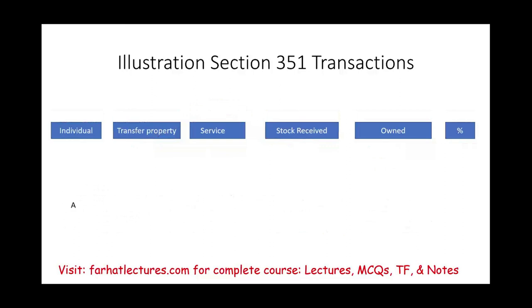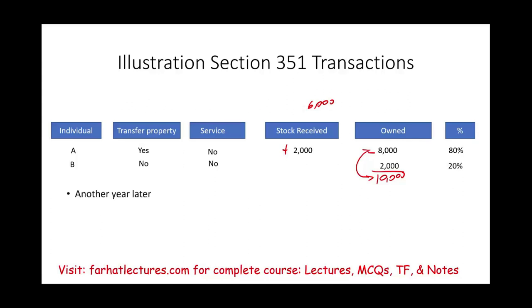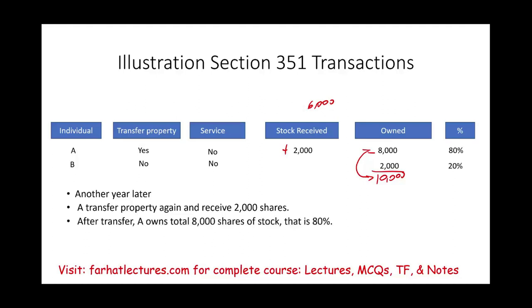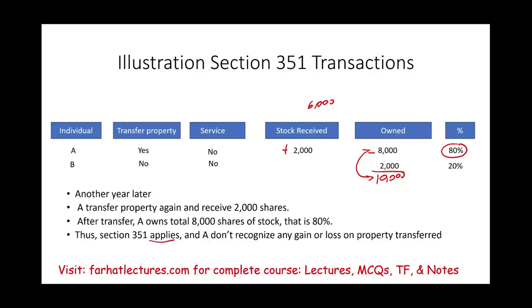Another illustration: Individual A transfers more property and receives 2,000 additional shares, bringing A's total to 8,000. B still holds 2,000. Total shares: 10,000. After the transfer, A owns 8,000 out of 10,000, which is exactly 80% — the magic number. B owns 20%. Since A owns 80% after the transfer, Section 351 applies. A does not recognize any gain or loss on the property transferred.